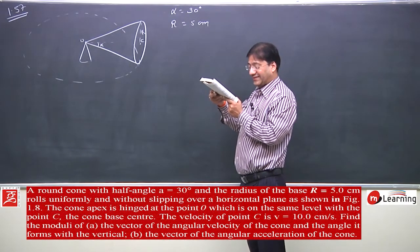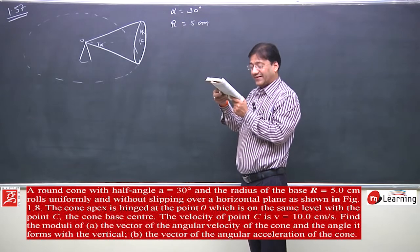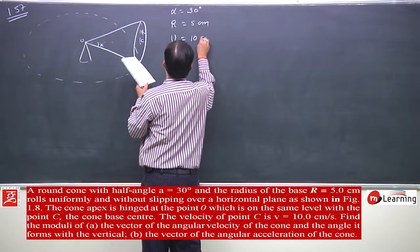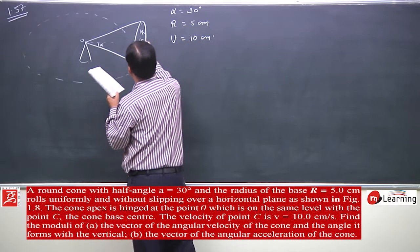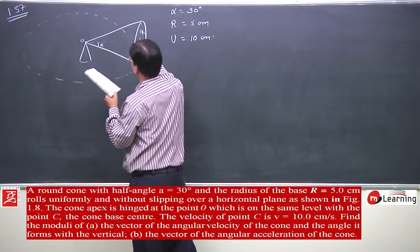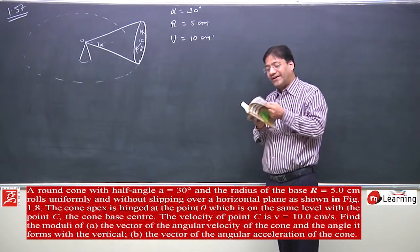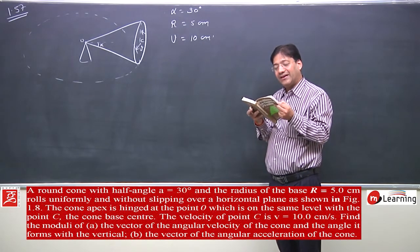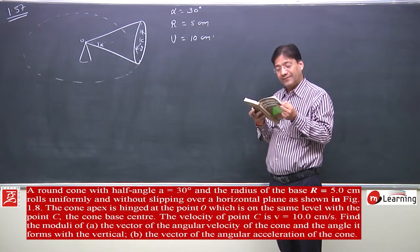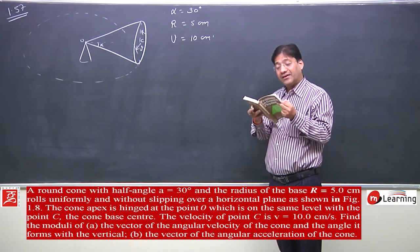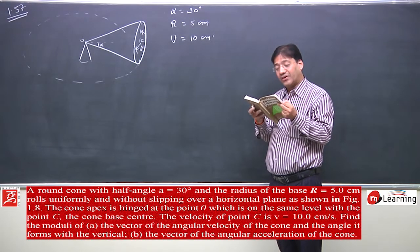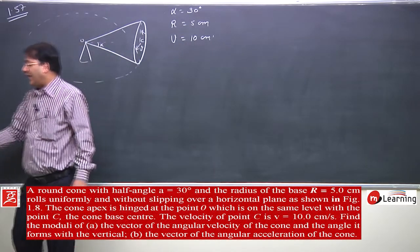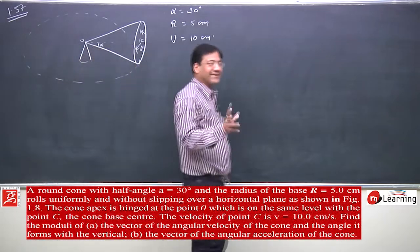The cone base center — the velocity of point C — is 10 centimeters per second, and this is moving at velocity V. Find the moduli of the vector of angular velocity of the cone and the angle it forms with the vertical, and the vector of angular acceleration of the cone.